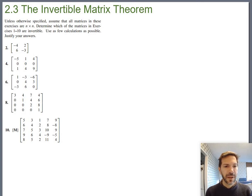Let's start with number 2. Looking at number 2, trying to find out if it's invertible or not, I notice right away that the second column is a multiple of the first column. If you multiply the first column by negative 1 half, you get the second column, which means the columns are not linearly independent, which means it is not invertible. So already we could say this one's not invertible.